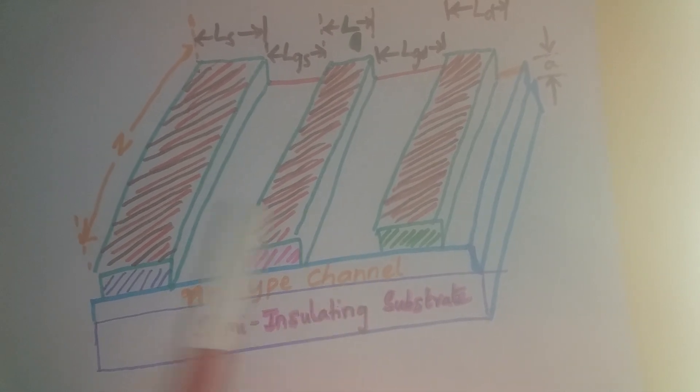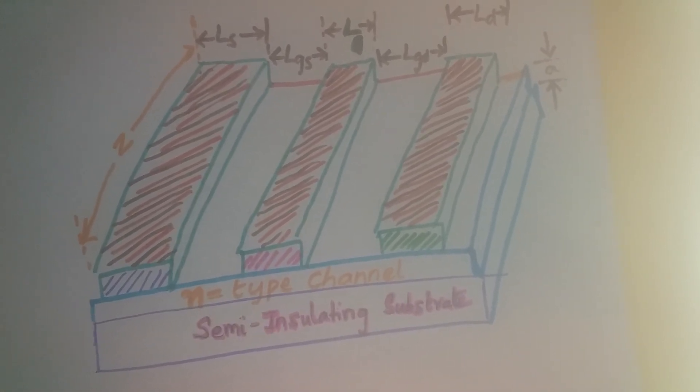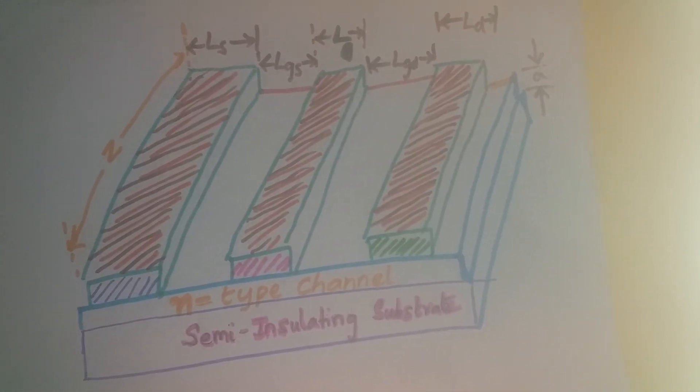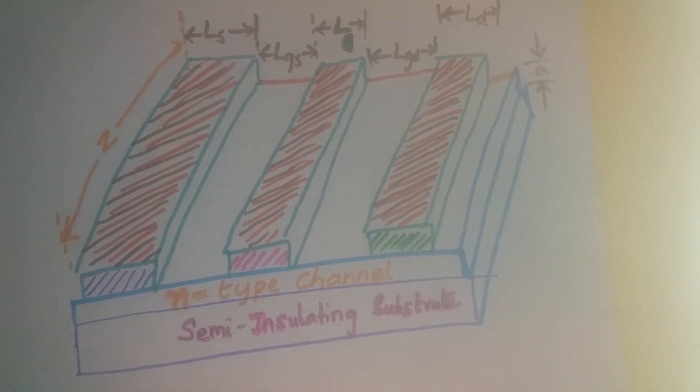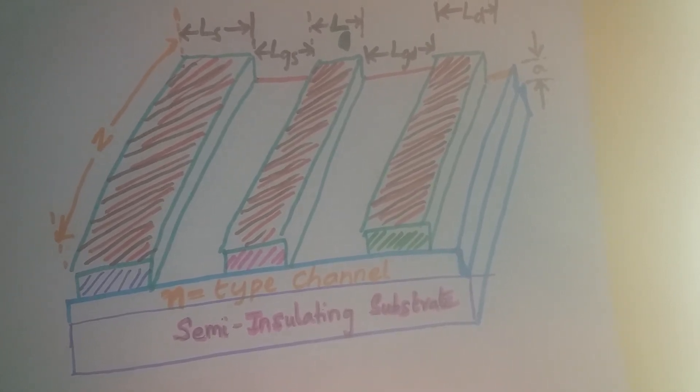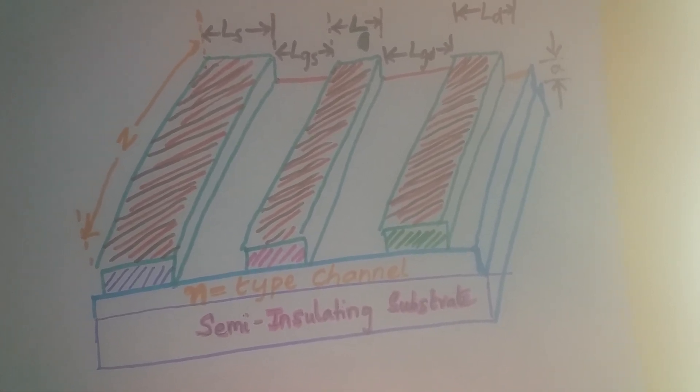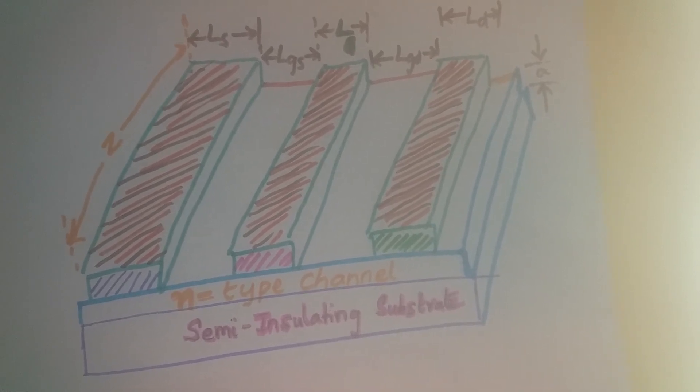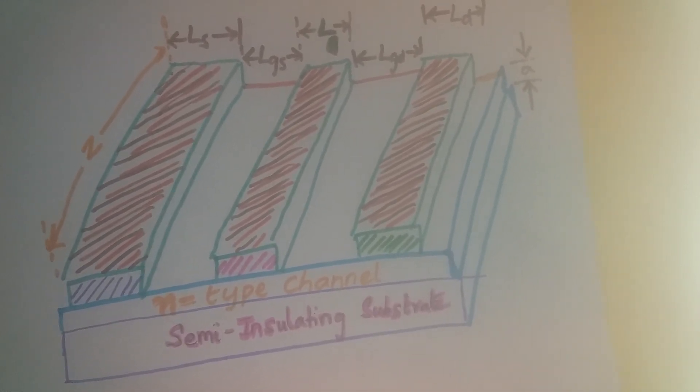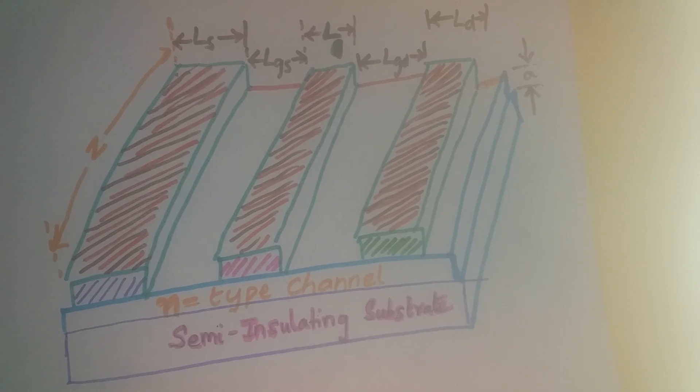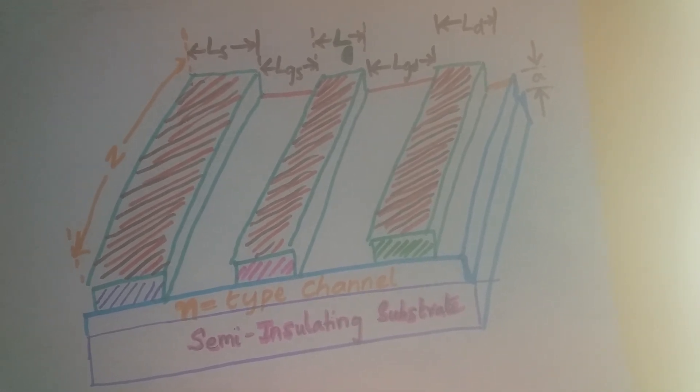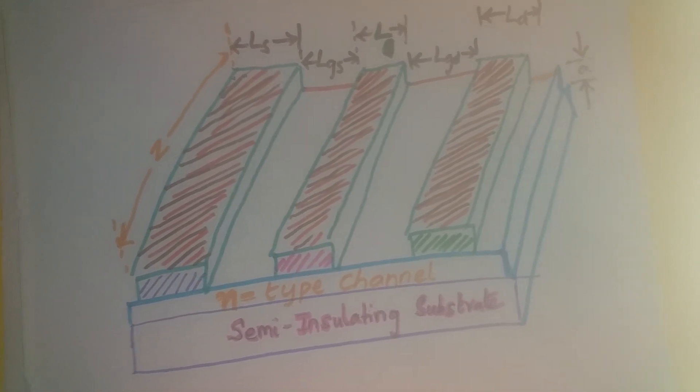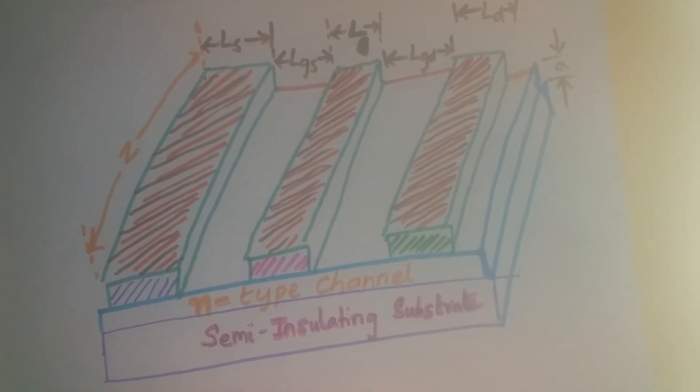Now, the gate length L is the most important dimension of a MESFET. And this characterizes the MESFET performance, that is the most critical performance, the maximum frequency limitation of the MESFET. Gate lengths are typically of the order of 0.1 to 1 micrometer.